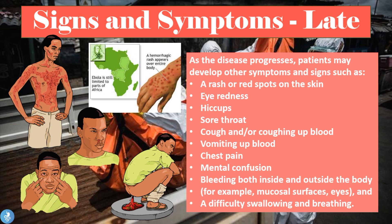Further late symptoms include cough or coughing up blood, vomiting up blood, chest pain, mental confusion, and bleeding both inside and outside of the body — for example from the mucosal surfaces such as the eyes and nose. The patient may exhibit epistaxis, which is bleeding from the nasal cavity, as well as difficulty swallowing and breathing.